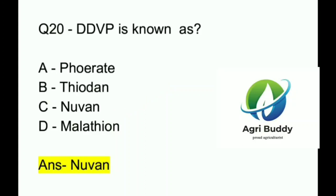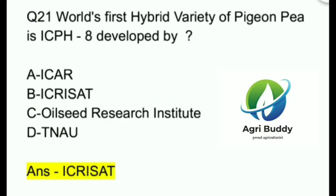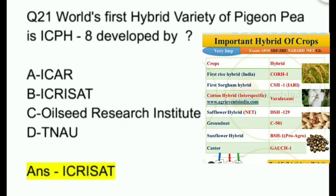Question 21. World's first hybrid variety of pigeon pea ICPH-8 is developed by? A. ICAR. B. ICRISAT. C. Oilseeds Research Institute. D. TNAU. And the answer is ICRISAT.